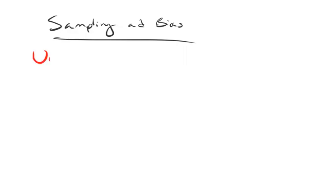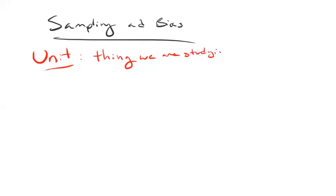The first definition is a unit. A unit is literally the thing you're studying — the object about which you wish to learn something. Most of the time, the unit is the row in your data set. Not all data sets are rectangular spreadsheets with rows and columns, but a lot of them are. So a unit is the thing we're studying, and it's also often a row in your data set.